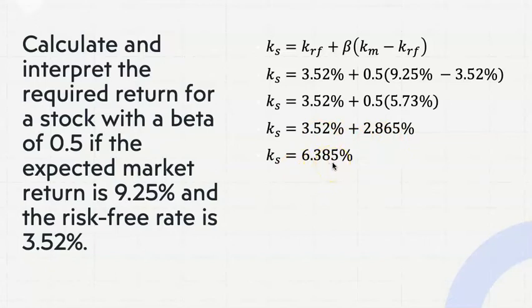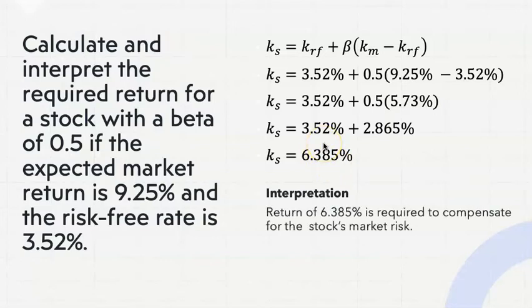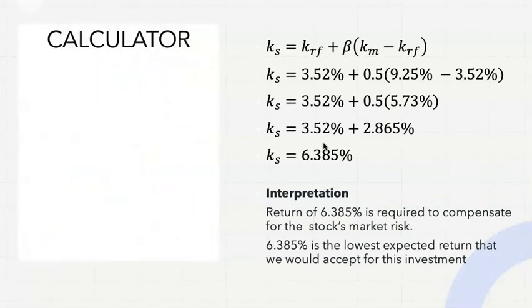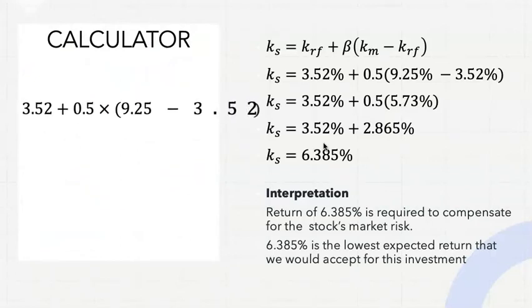Interpretation: 6.385% is the return required to compensate for the stock's market risk — the lowest expected return we would accept for this investment. We would gladly accept more, but we would not accept less. Using a calculator: punch in 3.52 plus 0.5 times (9.25 minus 3.52), and it gives the same figure: 6.385%.